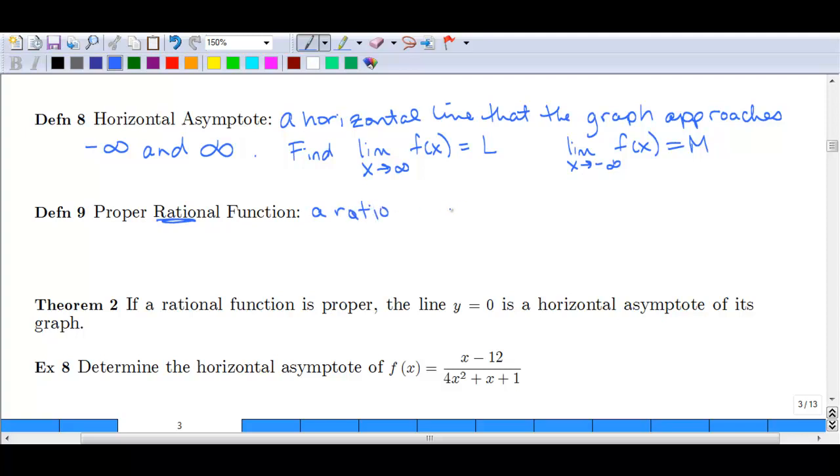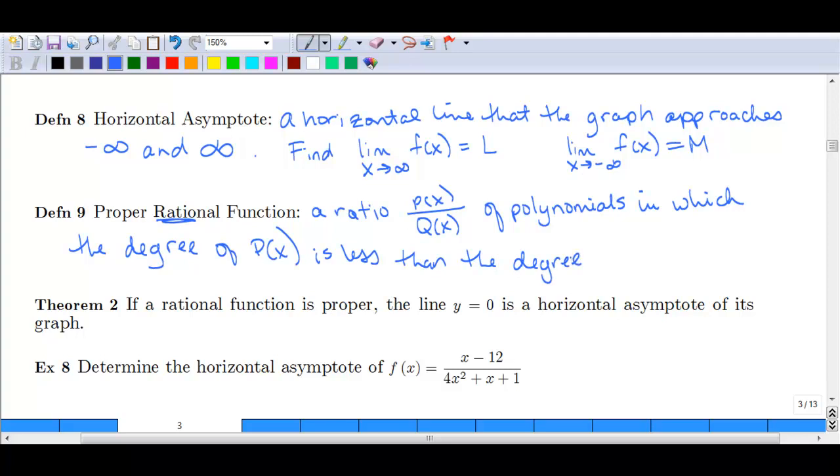In which the degree of P(x), that numerator, and again, the degree means the highest exponent, is less than the degree of Q(x). So in other words, we want to make sure that the numerator has a smaller exponent than the denominator. And again, that's the highest exponent in both cases if we put them in descending order. One of the nice things about this is if you have a proper rational function, then the horizontal asymptote is very easy. We have this theorem here that says that it is y equals 0.